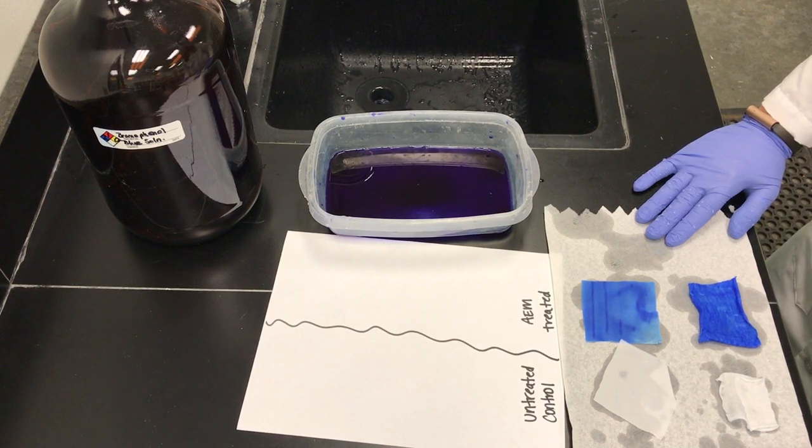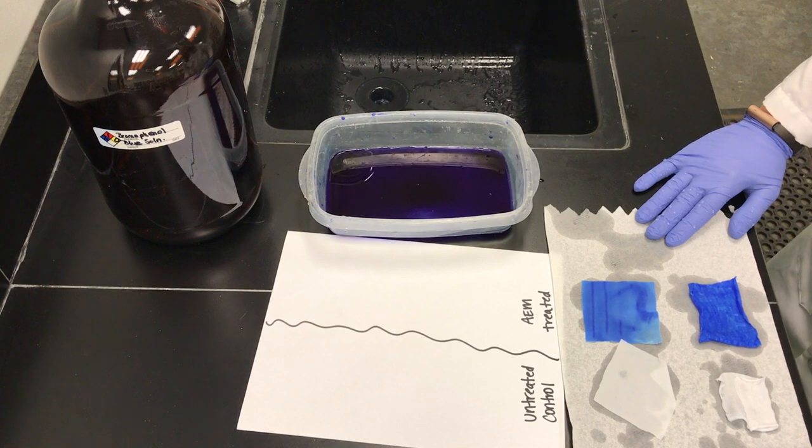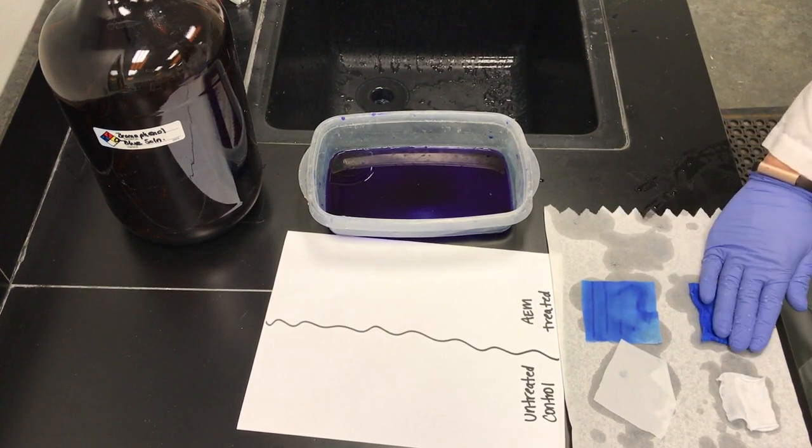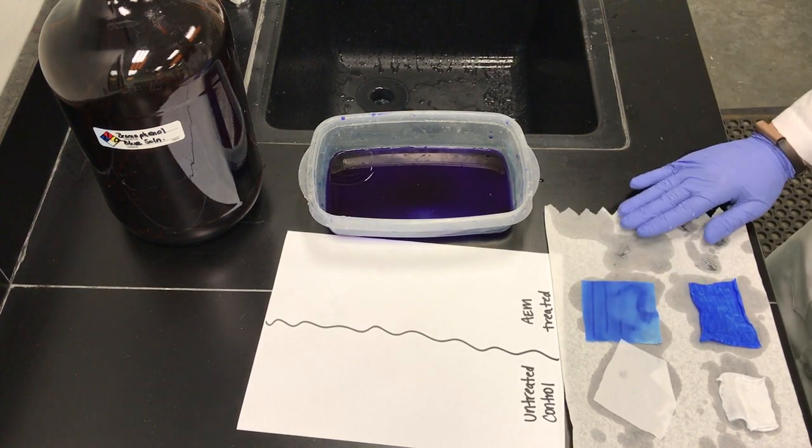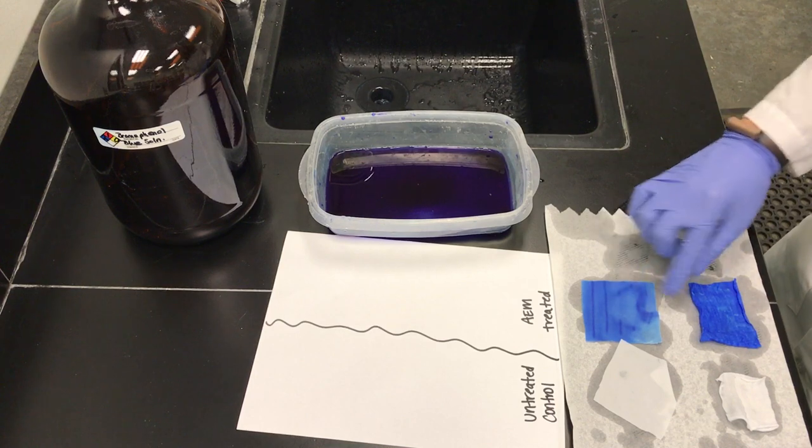Two different fabric types that are treated at the same application level can show differences in staining and intensity. These two fabrics are 100% cotton and 100% polyester and are treated at the same application level. Notice the difference in intensity.